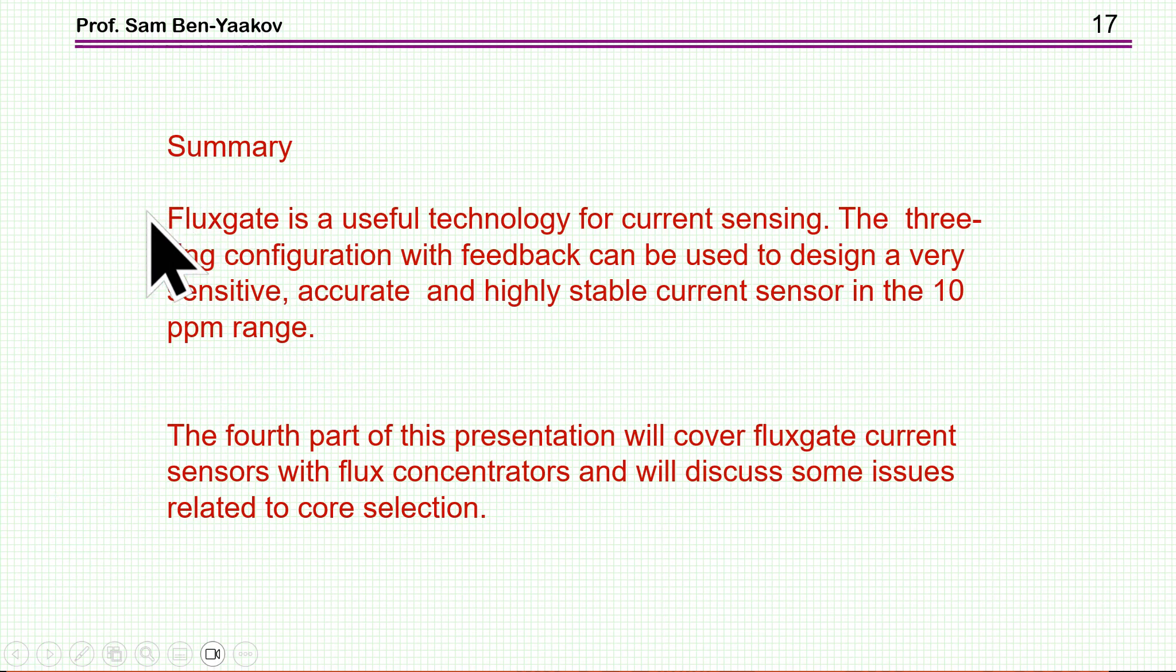Let me just summarize what we have seen here. Fluxgate is really a useful technology for current sensing. The three-ring configuration with feedback can be used to design a very sensitive, very accurate, and highly stable current sensor, in which we have a sensitivity and accuracy and stability in the range of tens of ppm. This is very high.